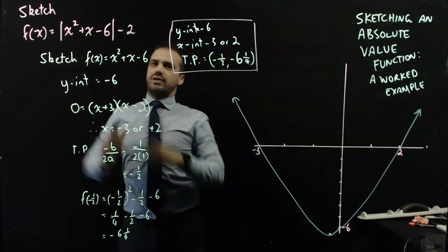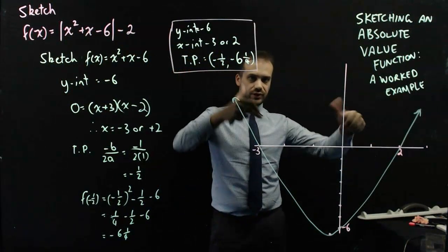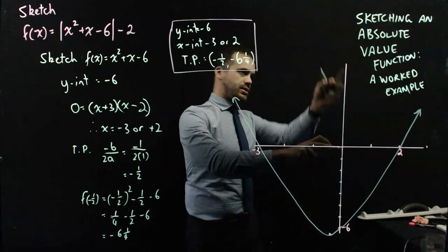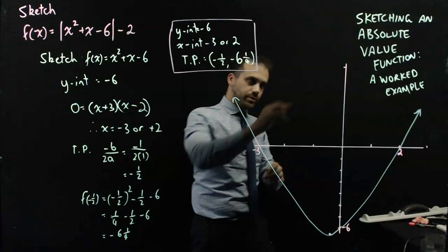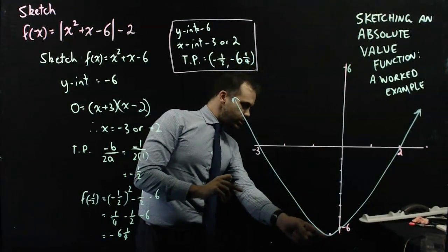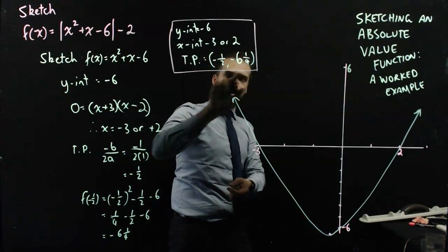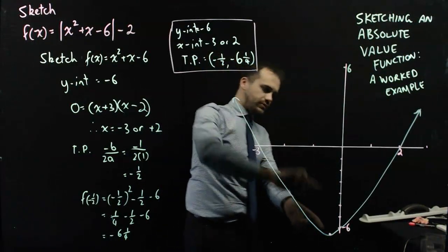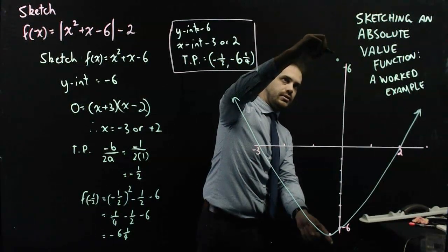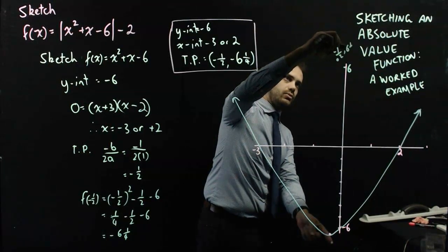What I've sketched is a rough quadratic of the form x squared plus x minus 6, but I need an absolute value. So I need to take the negative portion and flip it. That means the y-intercept gets flipped from negative 6 to positive 6, which according to my ruler is about here. And the turning point gets flipped as well — from negative one half, negative 6 and a quarter, to negative one half, positive 6 and a quarter, because I'm just flipping vertically.